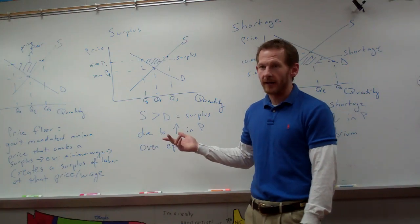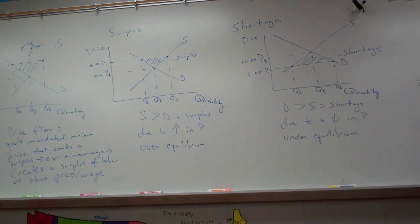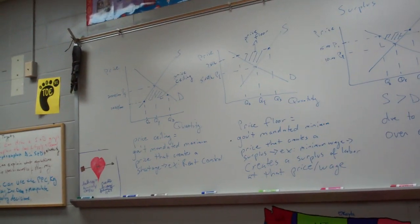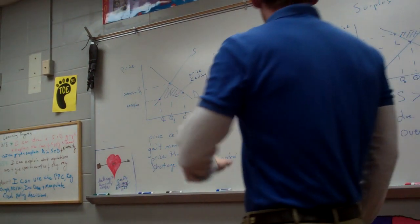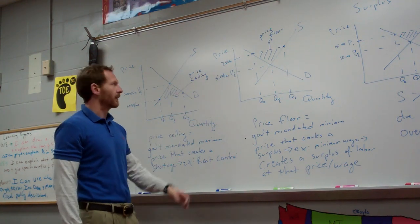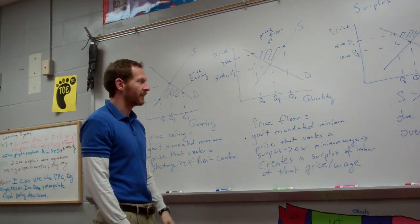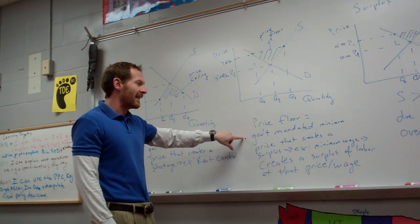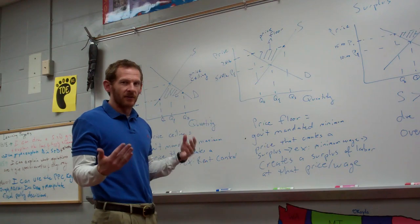There are actually some government-created surpluses and shortages because they interfere with the market. We call these price floors and price ceilings. A price floor is a government-mandated minimum price that creates a surplus. A good example of this is minimum wage.